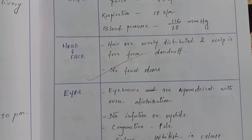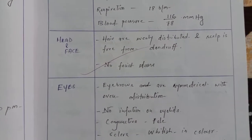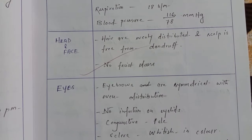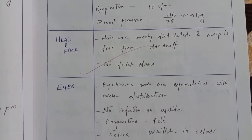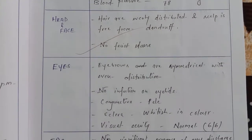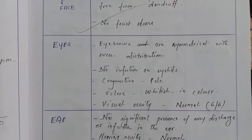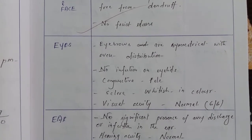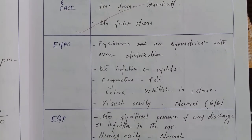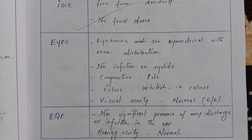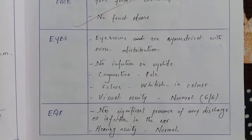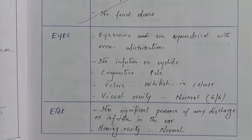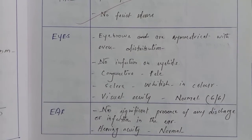Head and face: hair evenly distributed, scalp free from dandruff, no facial edema. Eyes: eyebrows symmetrical with even distribution, no infection on eyelids, conjunctiva pale, sclera white, visual acuity normal 6/6.